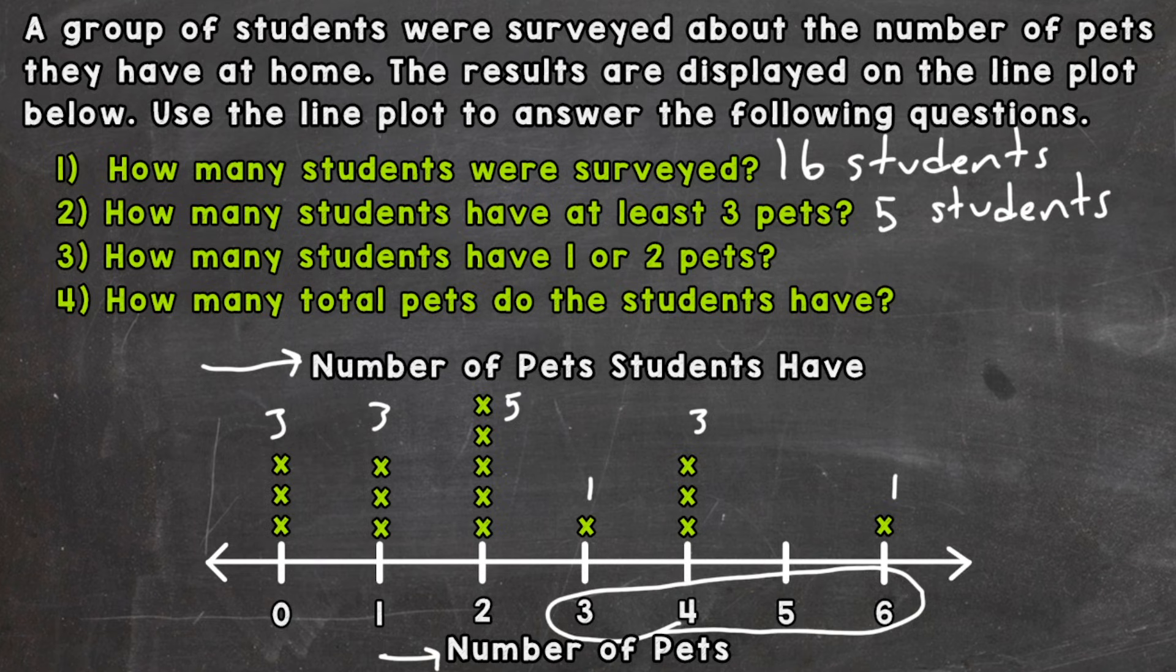Number three, how many students have one or two pets? So we need to take a look at this portion of our line plot, one or two. So three students have one pet and five students have two pets. So that's a total of eight students.